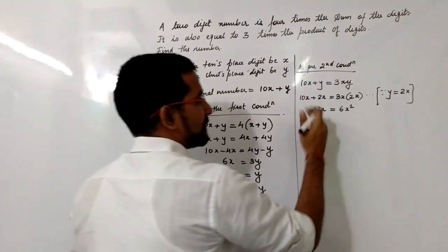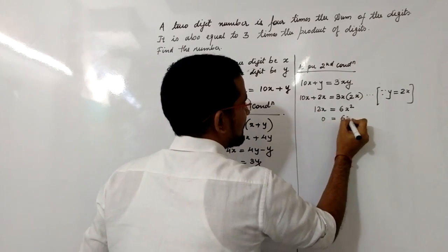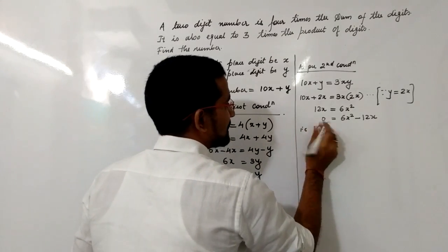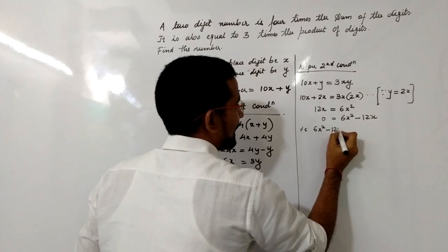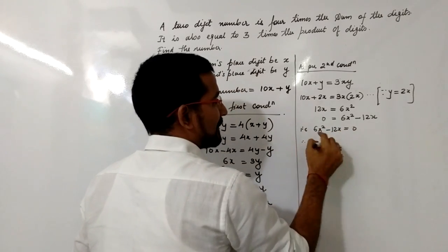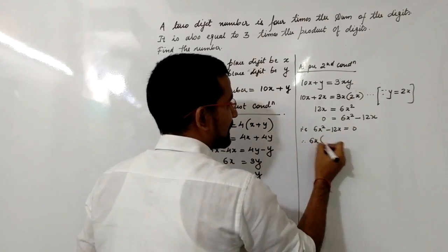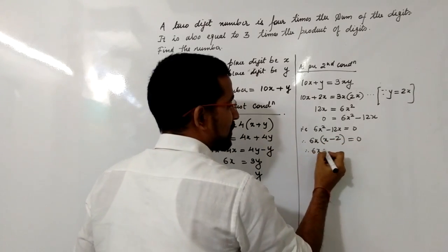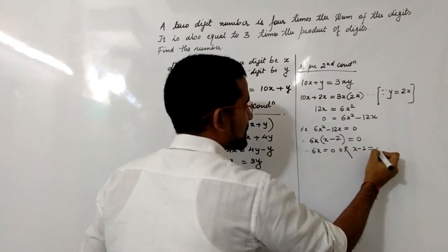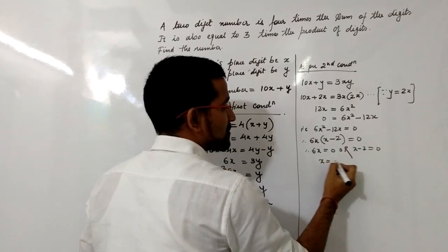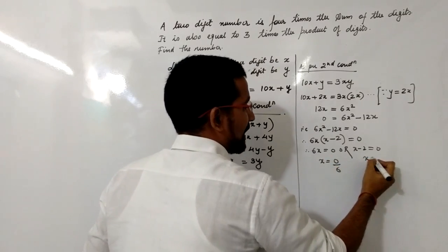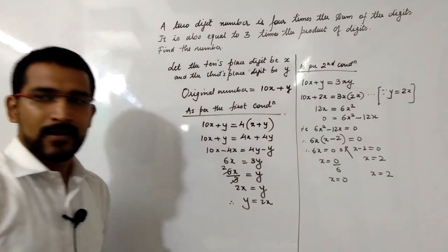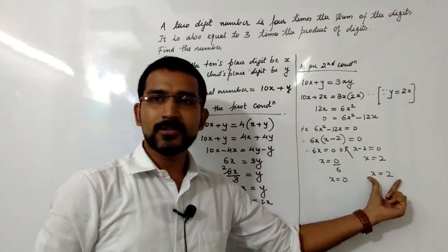Since y = 2x, the equation becomes 12x = 6x². Shifting to one side: 6x² − 12x = 0. Taking 6x as a common factor: 6x(x − 2) = 0. So 6x = 0 or x − 2 = 0, giving x = 0 or x = 2.